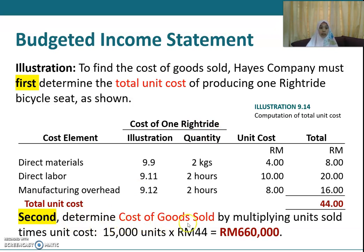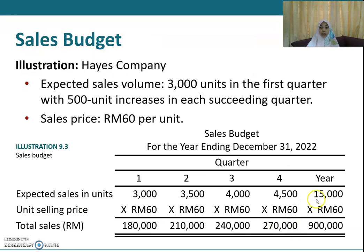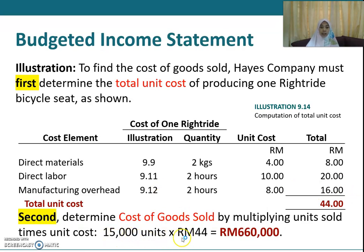The second step is to determine the cost of goods sold by multiplying units sold by unit cost. In this case, you have 15,000 units times 44 ringgit. The 15,000 units comes from your sales budget, where the expected units sold is 15,000 with a value of 900,000 ringgit. So 15,000 units times 44 ringgit per unit gives you 660,000 ringgit.